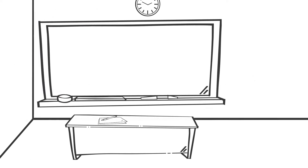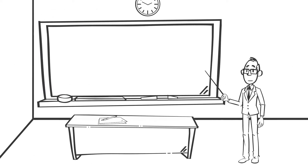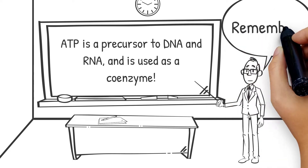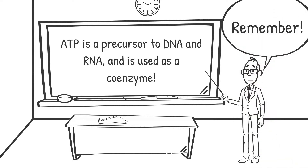Additionally, ATP is a precursor to DNA and RNA and is used as a coenzyme, which is a non-protein compound that is necessary for the functioning of an enzyme.